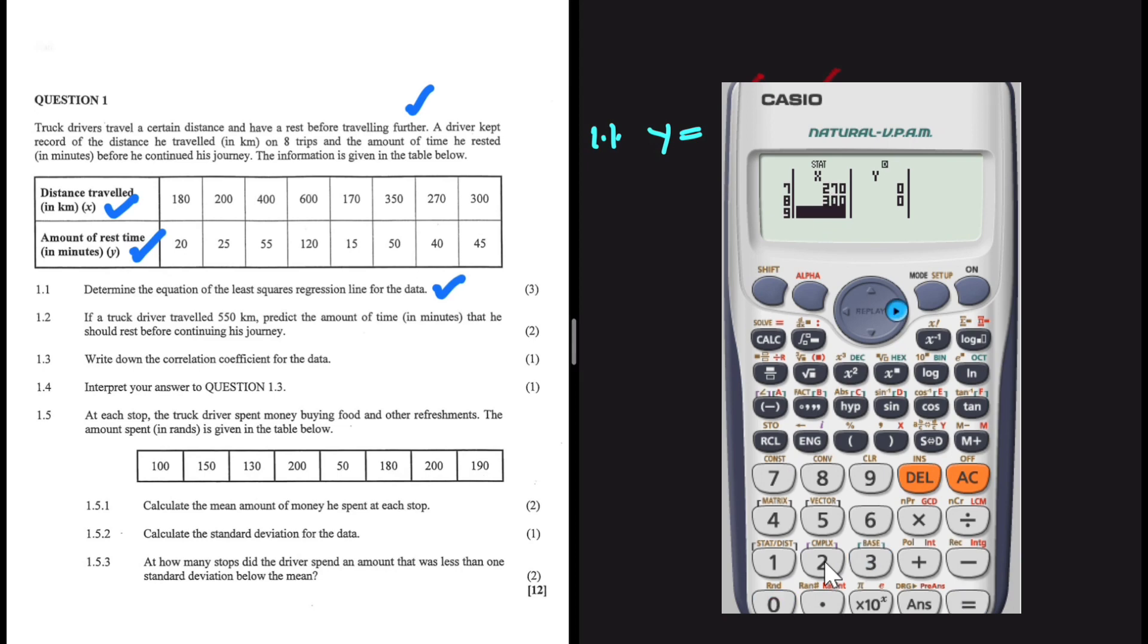After doing that, we want to punch in the y values next to the corresponding x. So 180 is going with 20, 200 is going with 25, 400 is going with 55, 600 with 120, a big jump between 400 and 600, and then 170 is going with 15, 350 with 50, 270 with 40, and lastly 300 with 45. You have to verify that you've entered the correct data, because if you make a mistake when you enter your data, all your answers are going to be incorrect. So after entering your data, you press equals two a couple of times, you press AC.